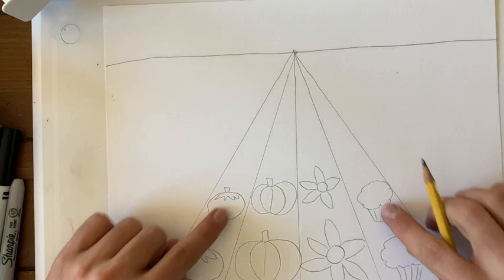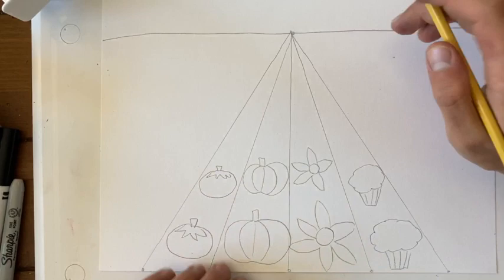All right, there's my next row of crops. I'm going to make as many as I can. They're going to go all the way down towards our vanishing point. Let's see how many I can do.